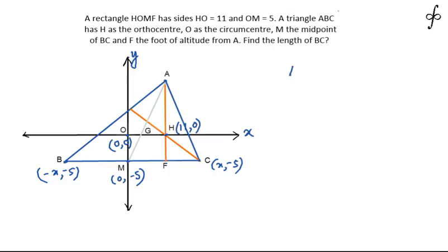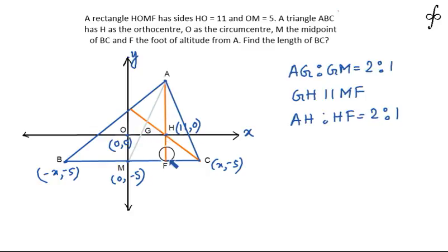We know that AG is to GM, this ratio is 2 is to 1. So AG to GM will be the same as AH to HF. Now the length HF is 5 units. So since HF is 5 units, we can easily claim that AH is going to be 2 times HF, that is AH is going to be 10.